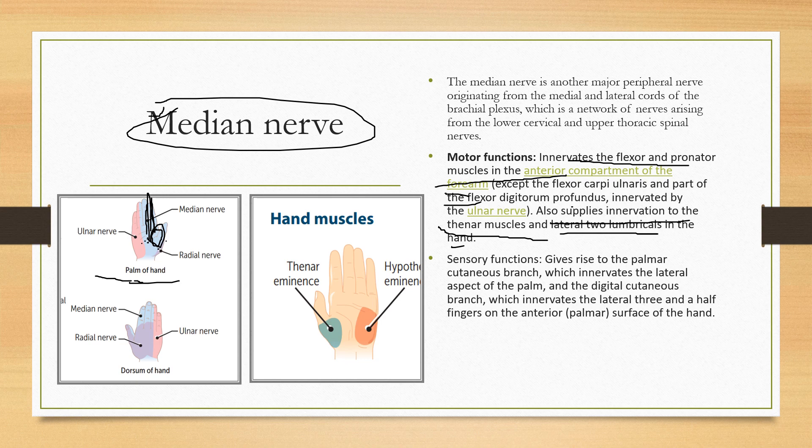On the dorsal aspect of the hand, the median nerve innervates the index finger, the middle finger, and half of the ring finger, as you can see in this diagram.